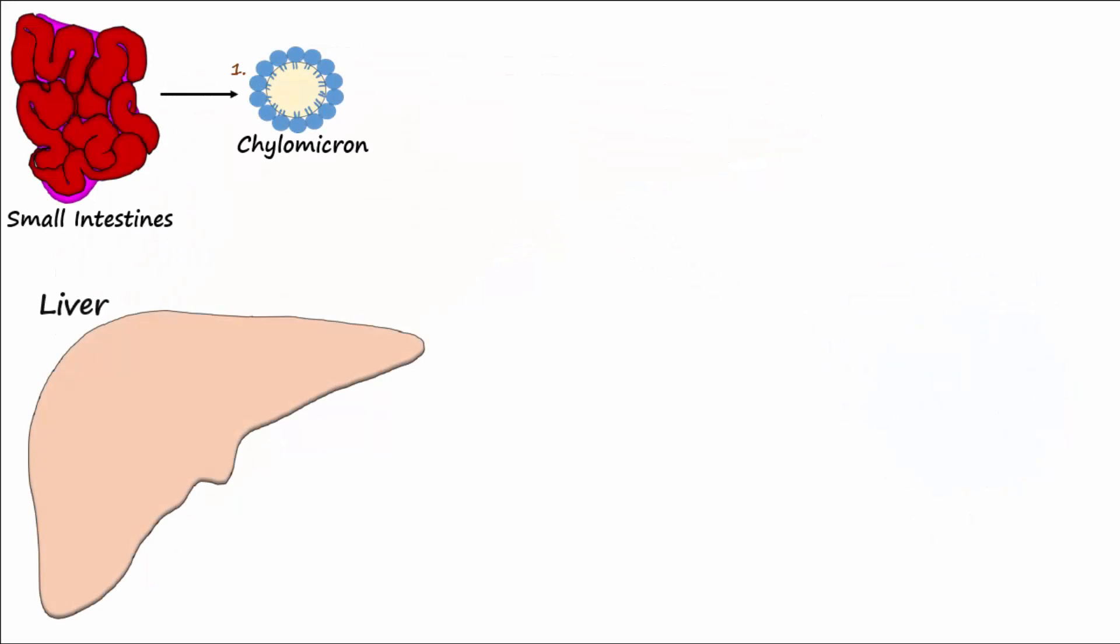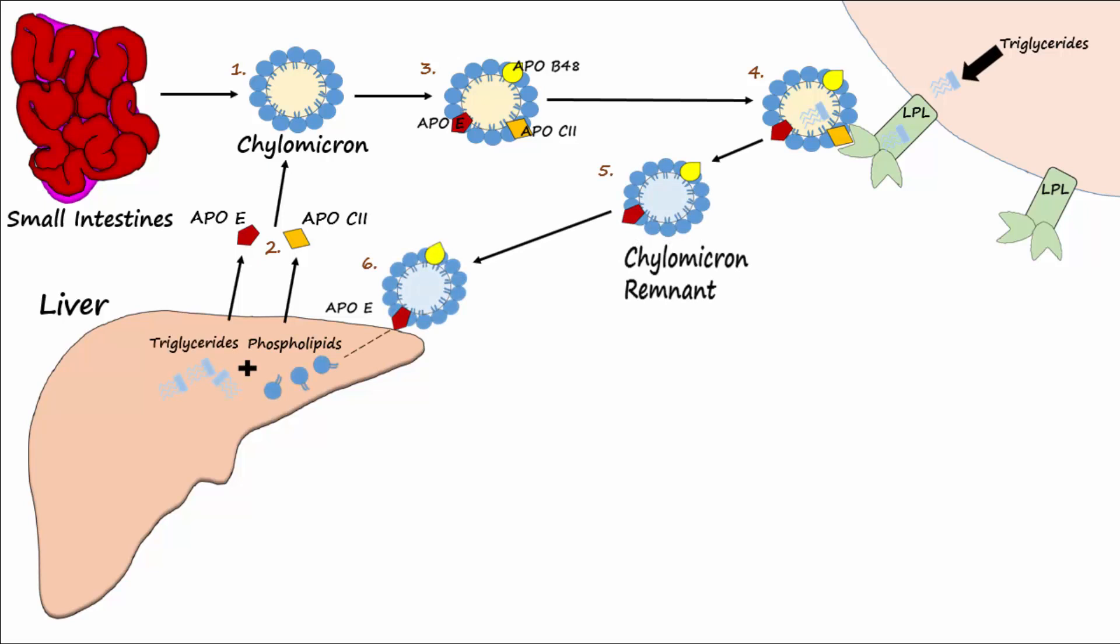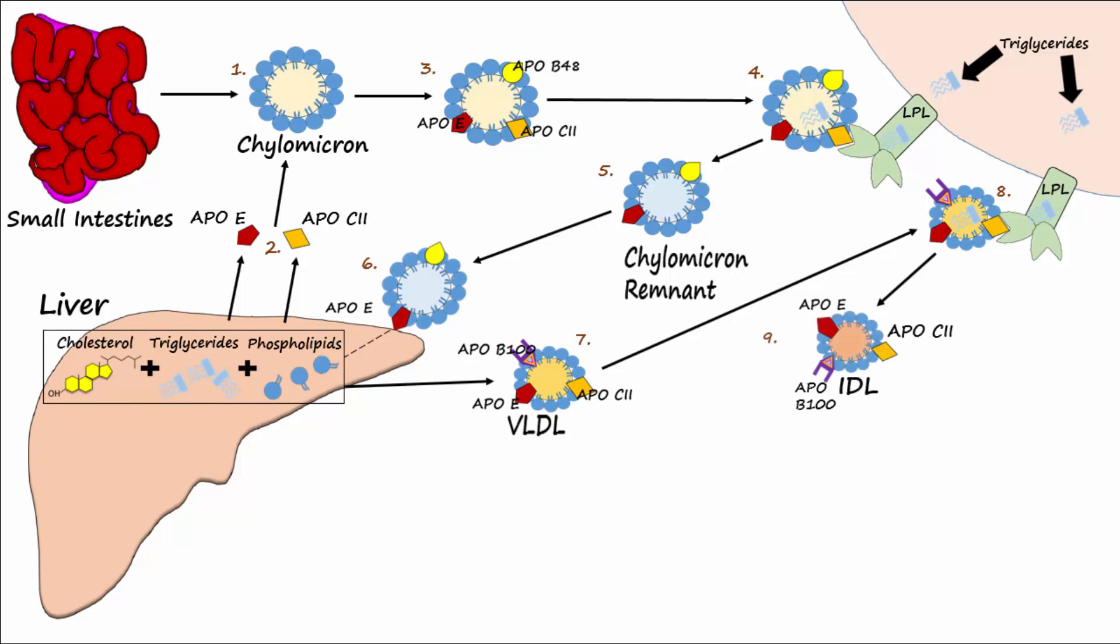Here now is a summary of the exogenous chylomicron pathway, the endogenous VLDL pathway, and the formation of HDL.